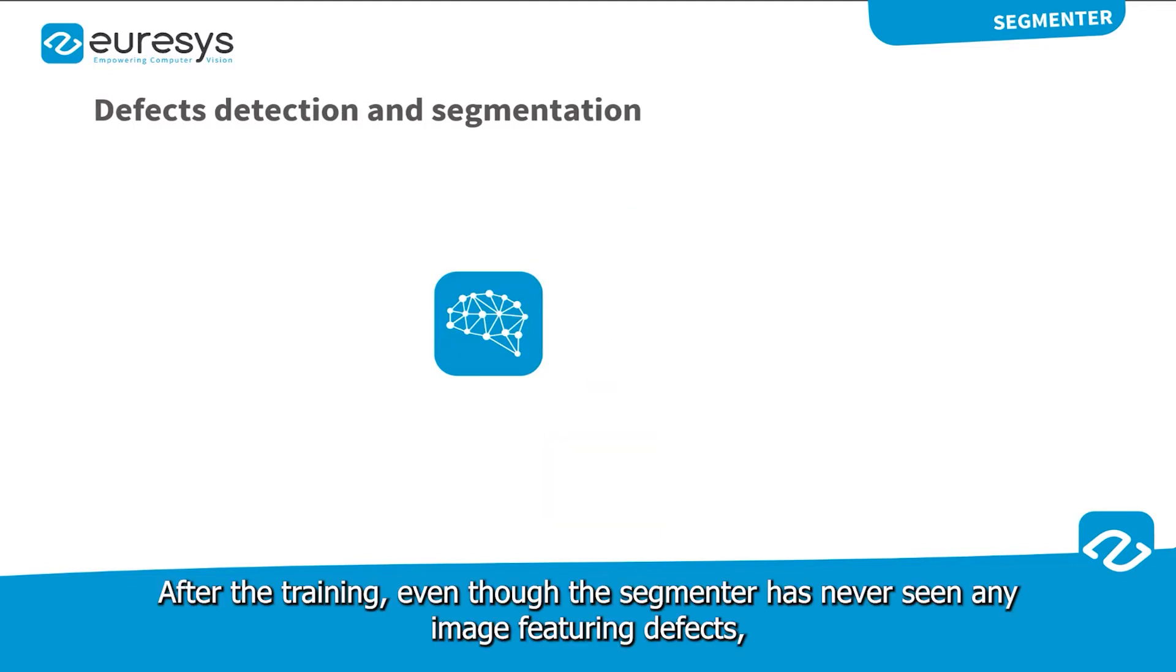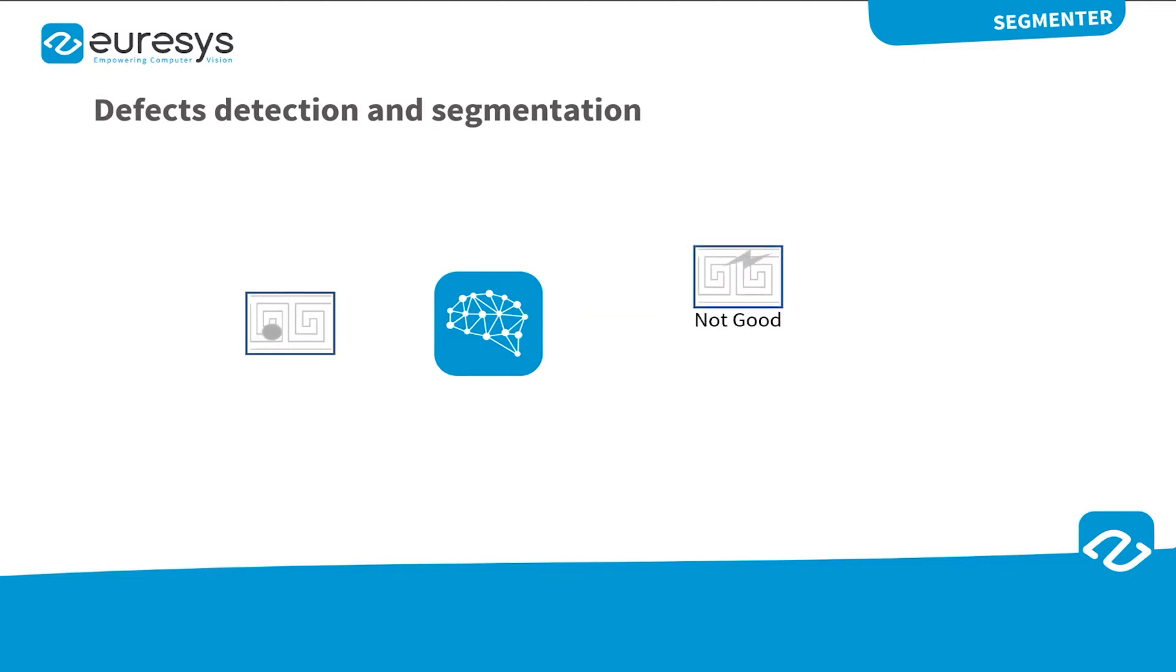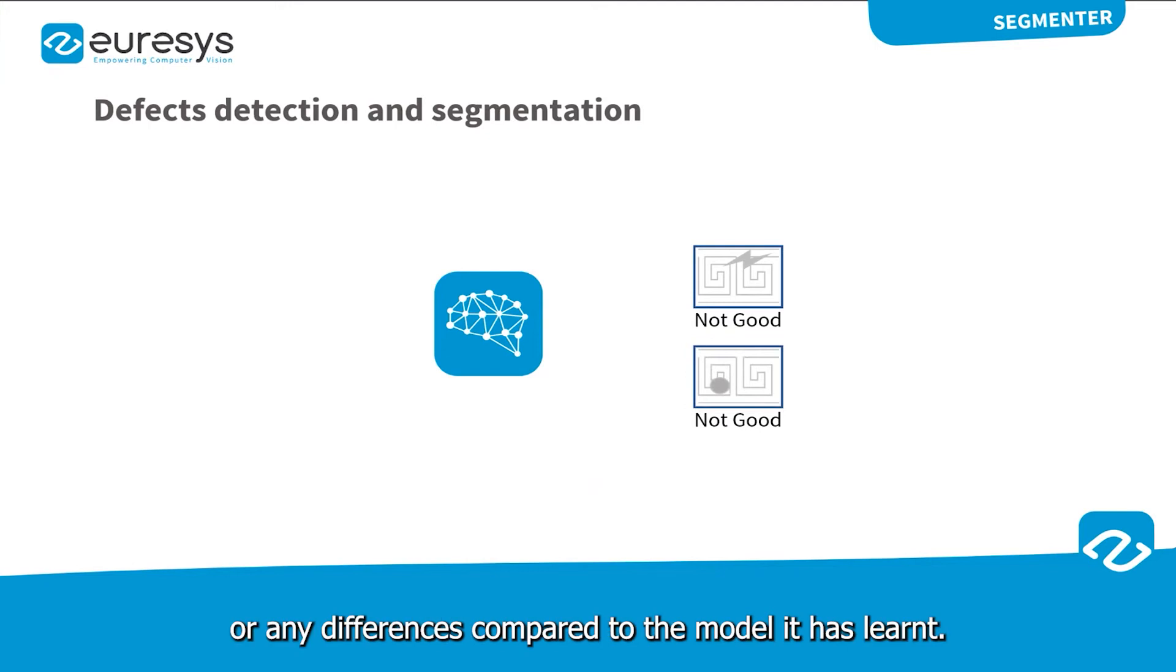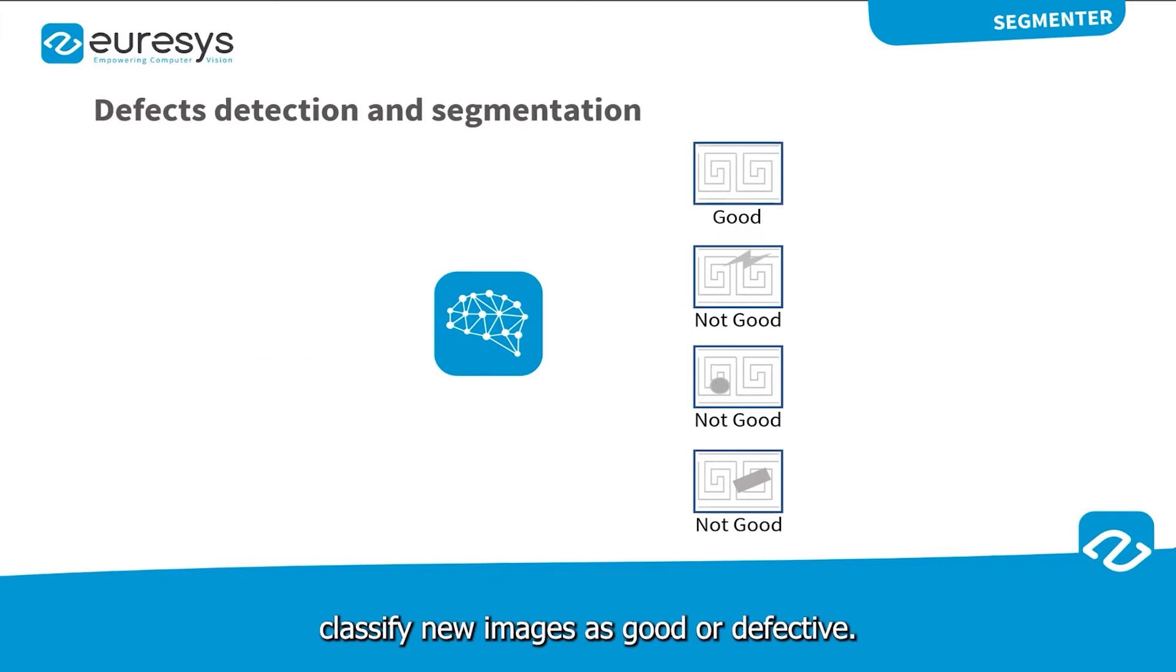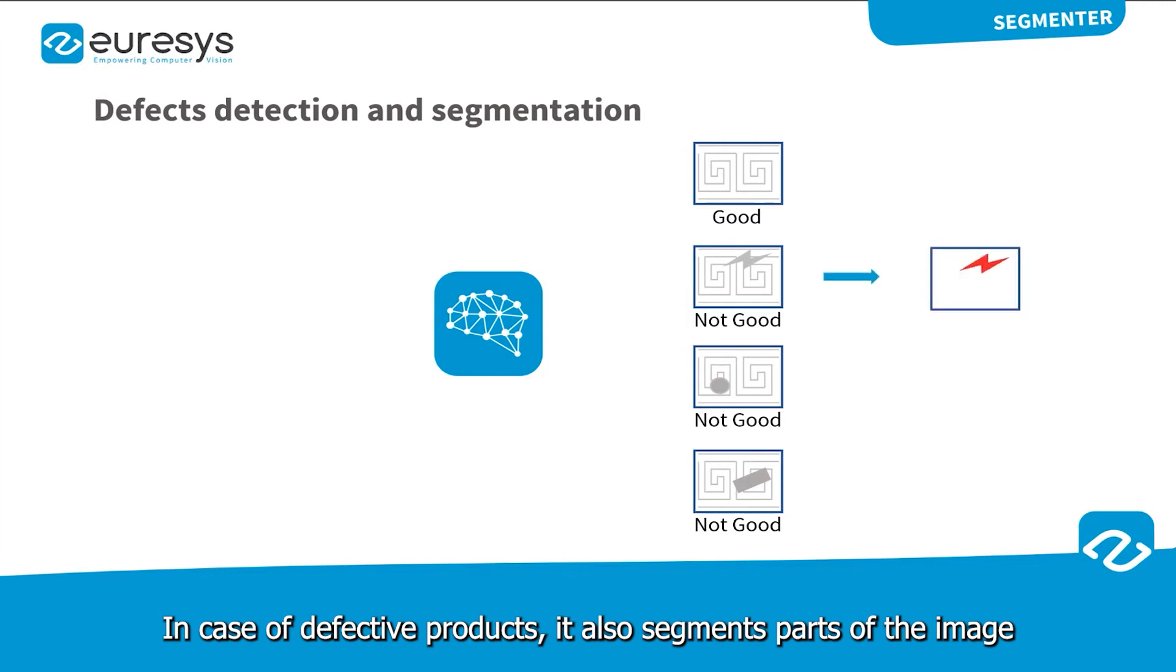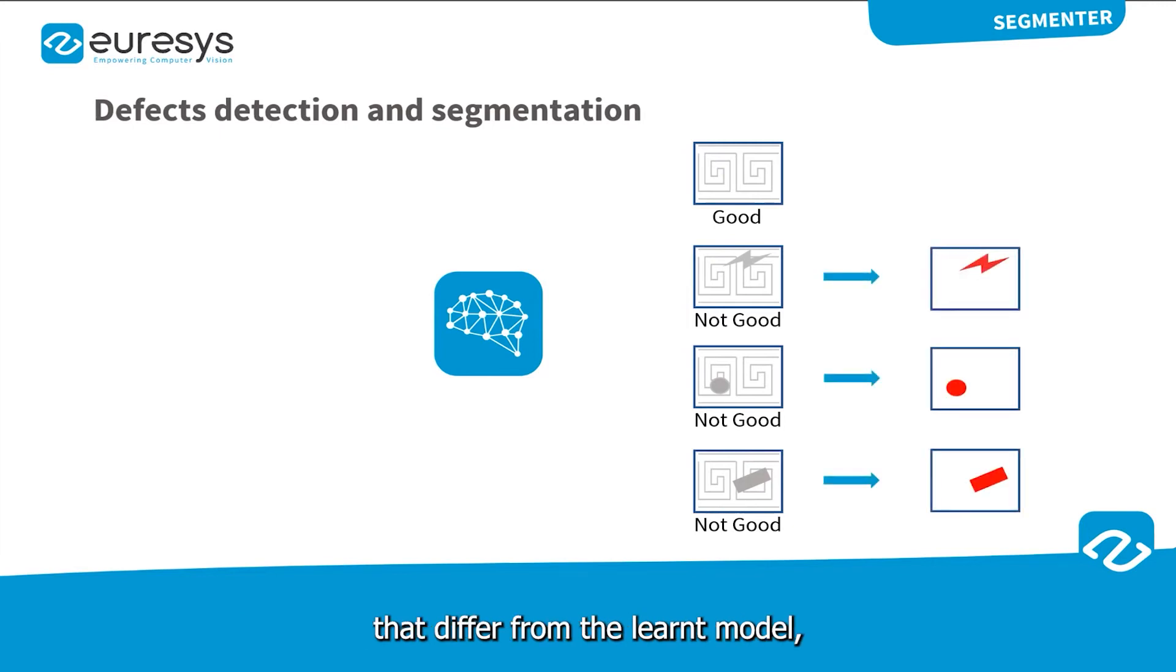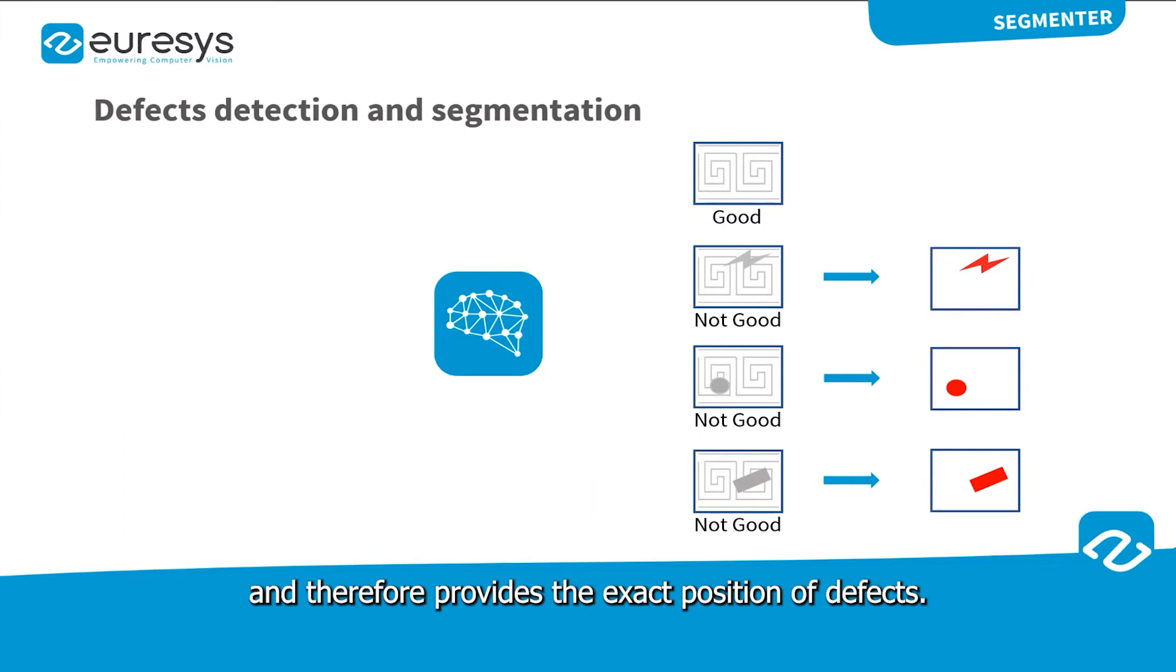After the training, even though the Segmenter has never seen any image featuring defects, it is able to detect anomalies or any differences compared to the model it has learned. The Unsupervised Segmenter can then be used to classify new images as good or defective. In case of defective product, it also segments part of the image that differs from the learned model, and therefore provides the exact position of defects.